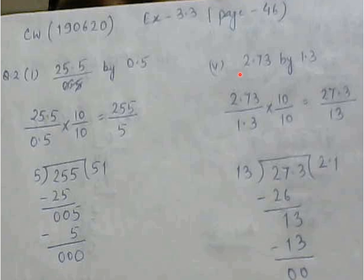Fifth sub part, 2.73 by 1.3. So 1.3 into 10 will give you 13. So 1.3 into 10, so into 10 down means into 10 up. 2.73 into 10 means 27.3. Then follow the same method and get the answer.